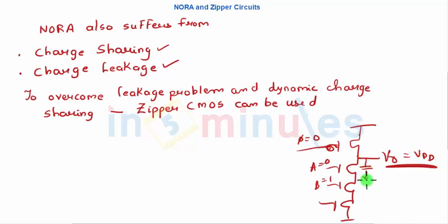So technically, this has to hold its charge equal to VDD. But because this transistor being off, this is also off, due to charge leakage this output node might tend to lose out on its charge. So there has to be some way in which we can hold this charge when my input is zero or how I can hold my VDD. There comes the need of zipper circuits.